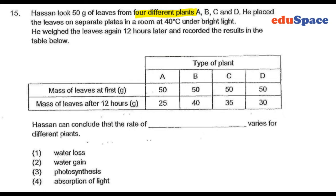Question 15. 1,250 grams of leaves from 4 different plants — so that's the change variable. We're trying to see what happens to these leaves after a 12-hour period in terms of their mass.